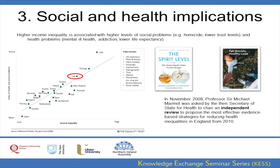Various studies have shown a strong relationship between society's level of income inequality and a range of social and health problems, as seen in the earlier presentation. The Spirit Level is a study by epidemiologists Wilkinson and Pickett which shows a strong correlation between inequality and worse outcomes in social issues such as life expectancy, maths and literacy, infant mortality, homicide, imprisonment, teenage births, trust, and obesity.